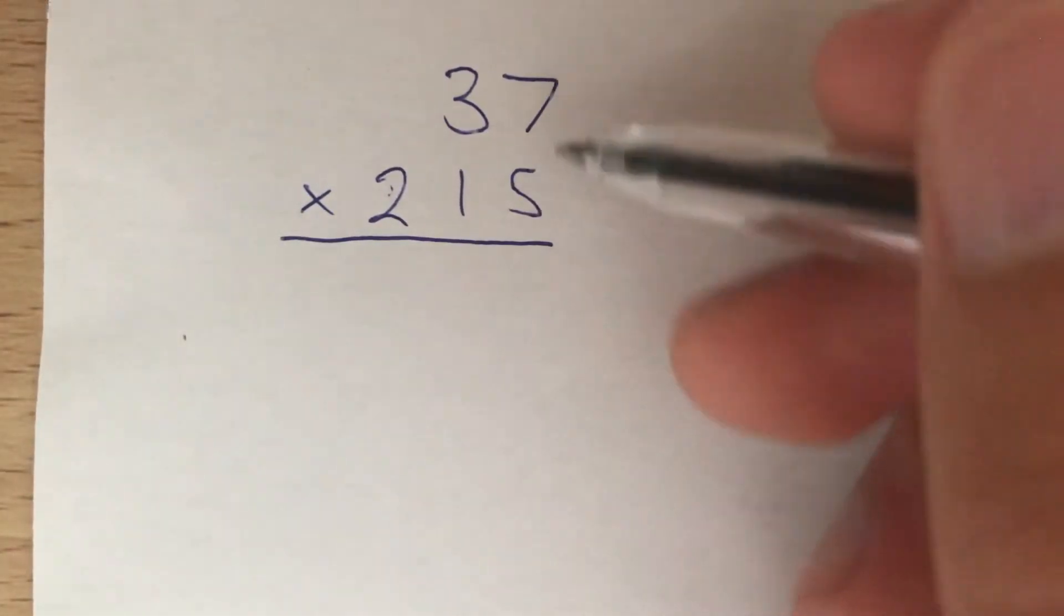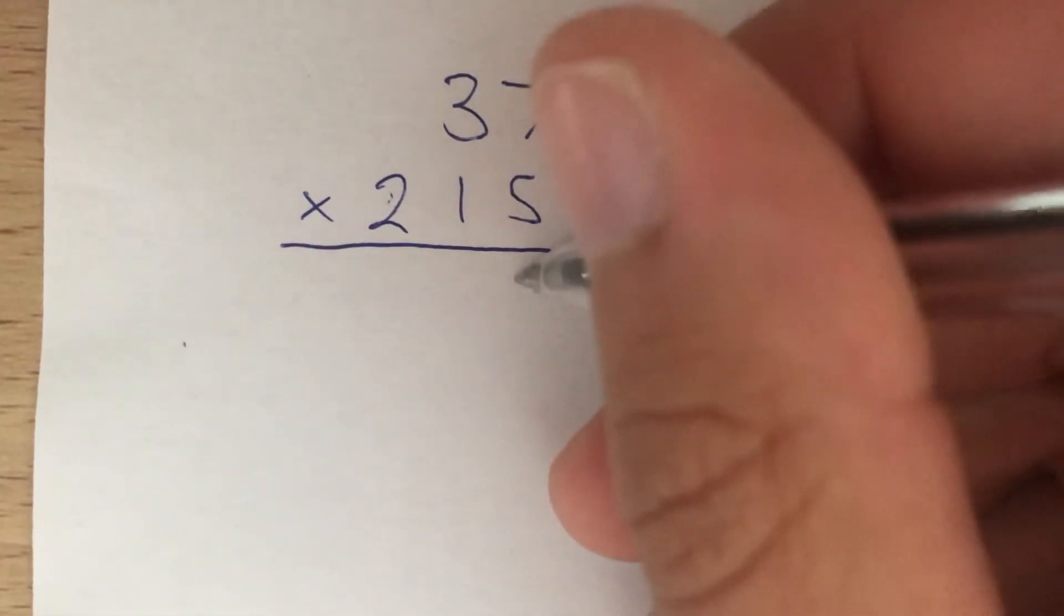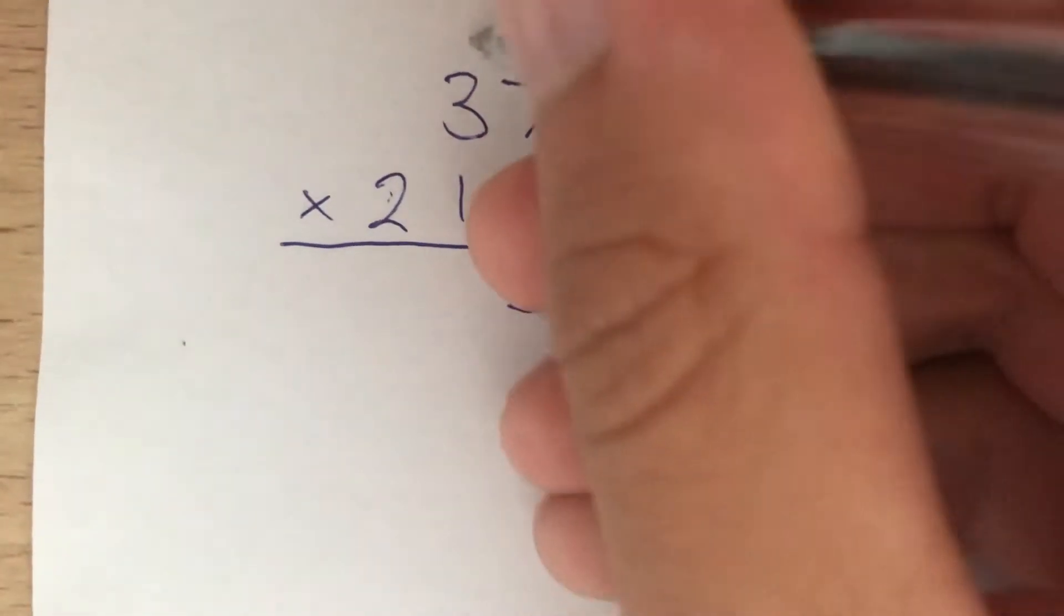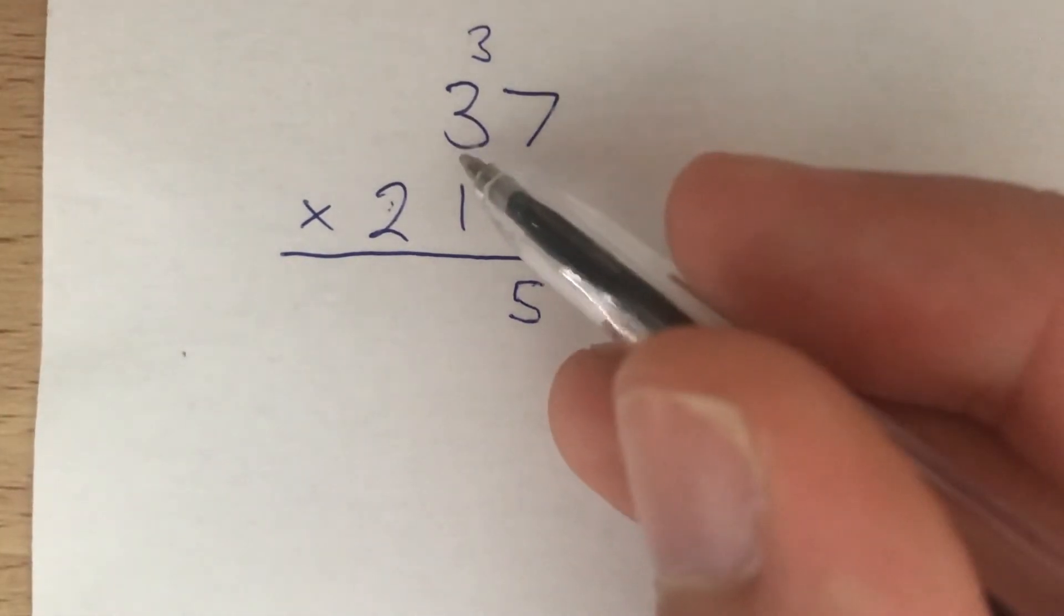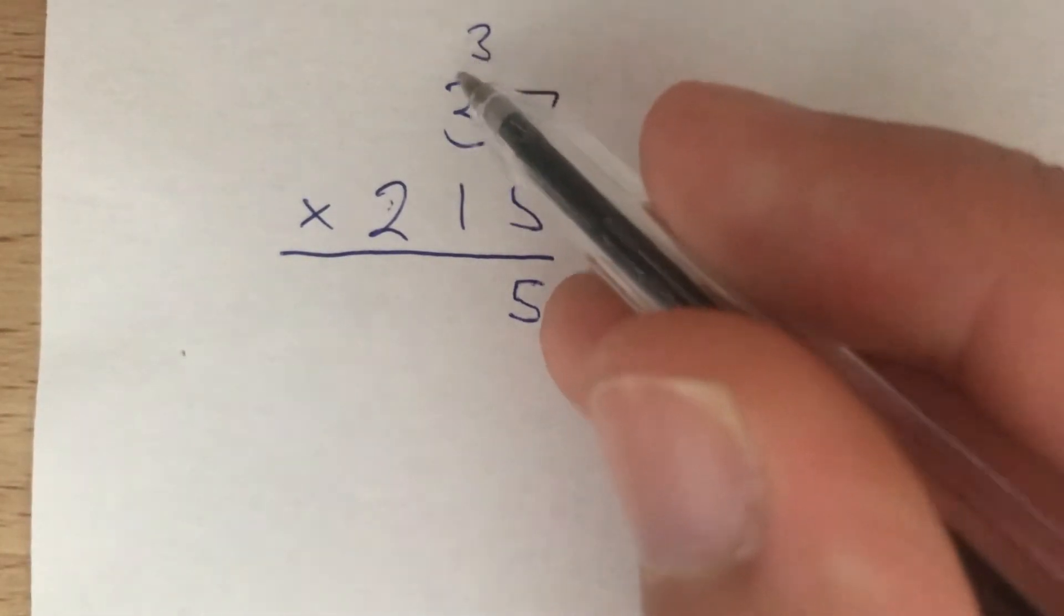First, 5 times 7 gives us 35. We carry the 3 over. 5 times 3 gives us 15. We add the carried 3 to get 18.